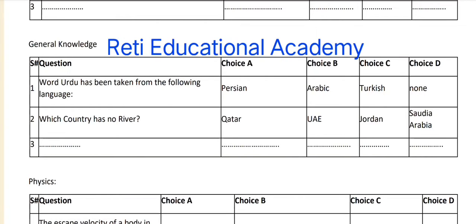Question number one: the word Urdu has been taken from which language? Option A: Persian, Option B: Arabic, Option C: Turkish, Option D: None of these. The correct answer is C — Turkish.